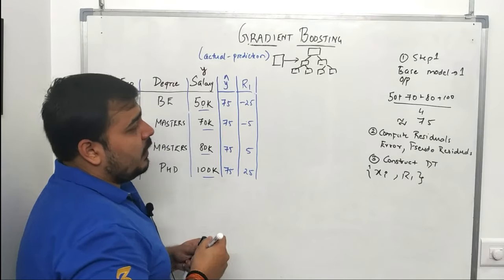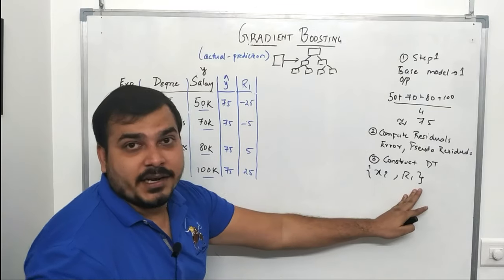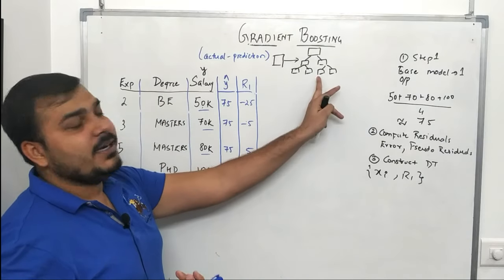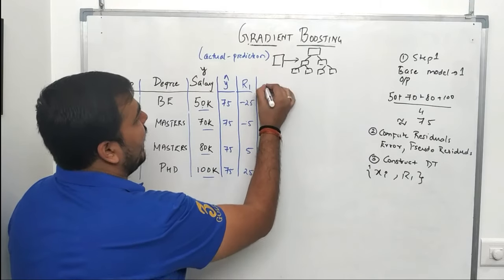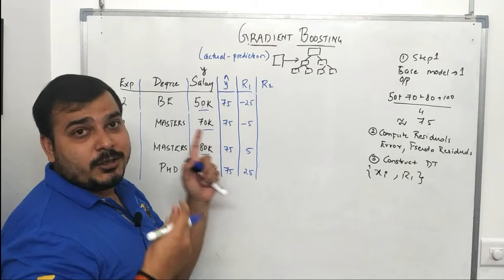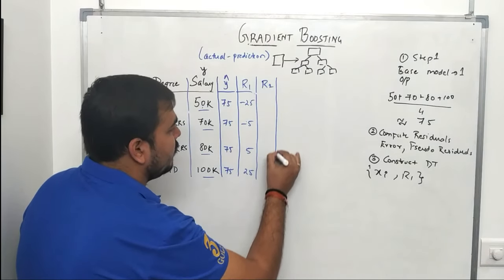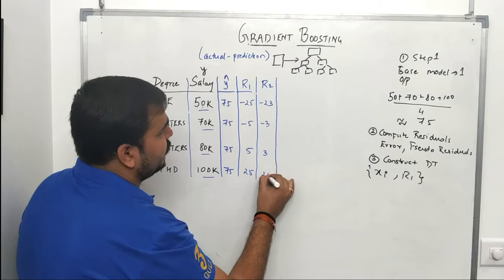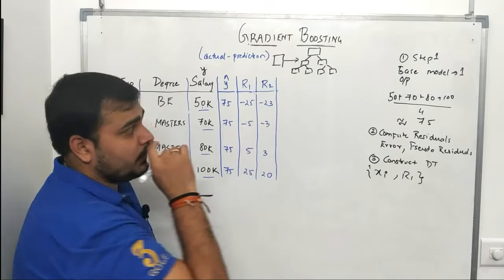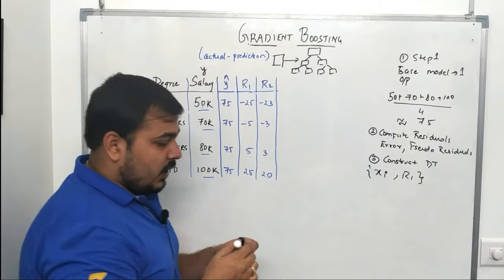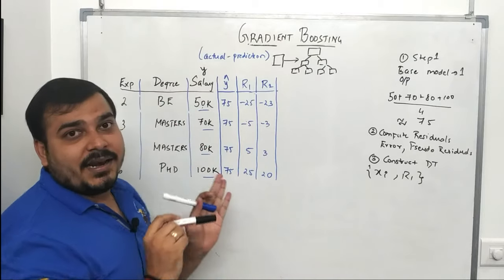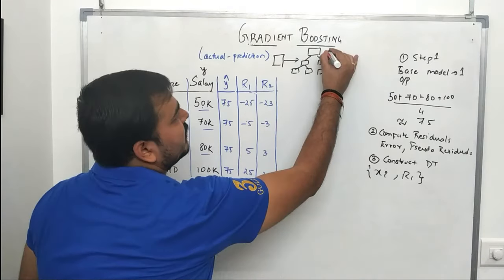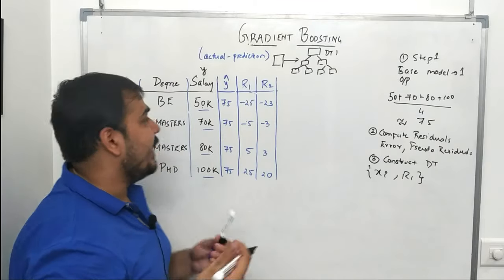When I pass the independent features through this decision tree it will predict residual outputs, giving me r2. Suppose r2 values are approximately minus 23, minus 3, 3, and 20. Now I pass the same input to both the base model and decision tree one sequentially to compute the predicted salary.